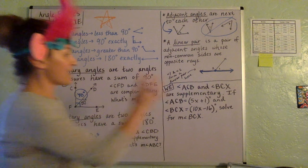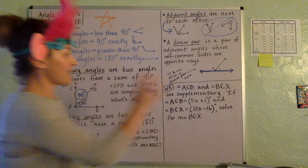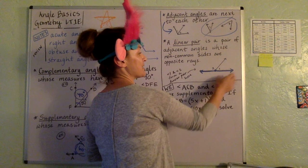But a linear pair is a pair of angles that are right next to each other whose non-common sides, this and this, are opposite rays. So together, they're a linear pair, 180 degrees, that is. All right, so let's take a look at this.